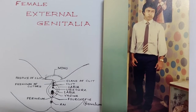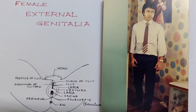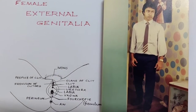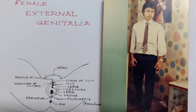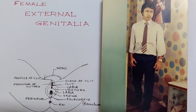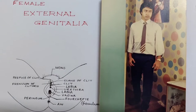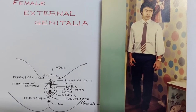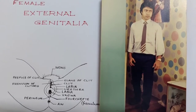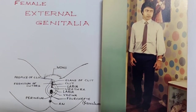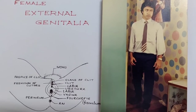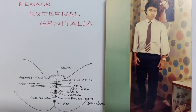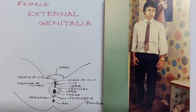Hello friends. This is a video lecture on female external genitalia. External means the part that is seen from outside. The female reproductive system consists of internal as well as external parts. The internal parts include uterus, vagina, cervix, etc., but here we will discuss only about the external genitalia.